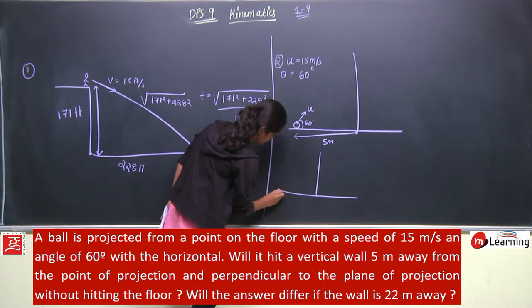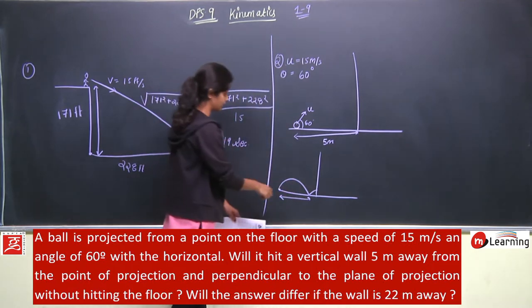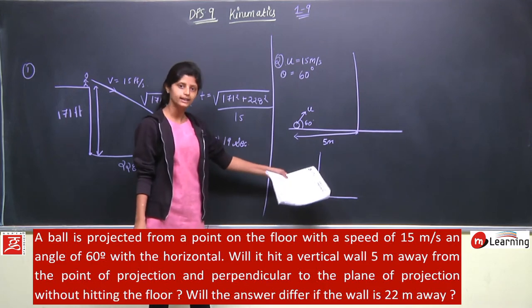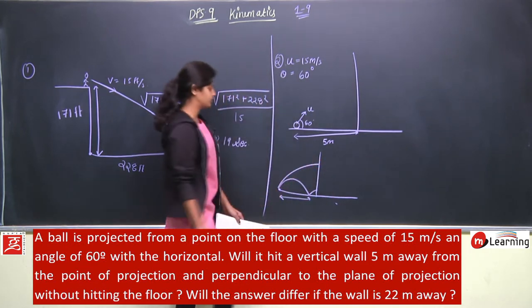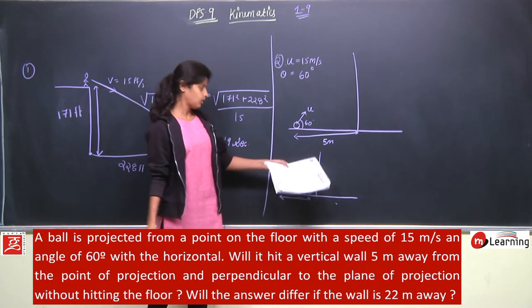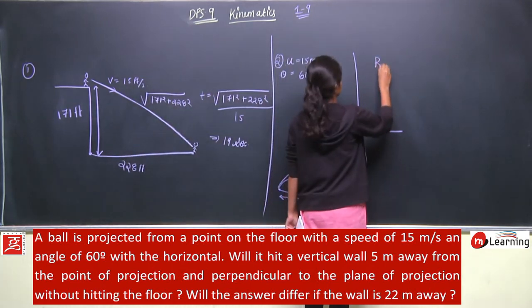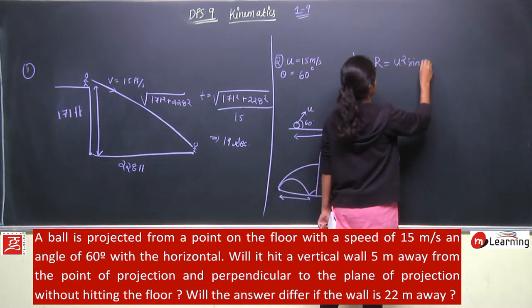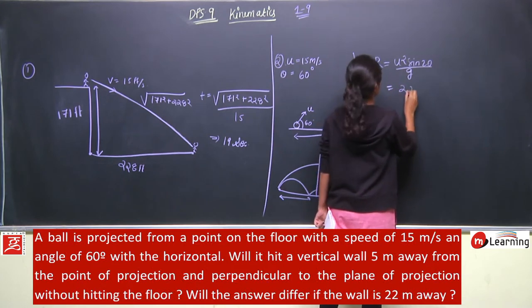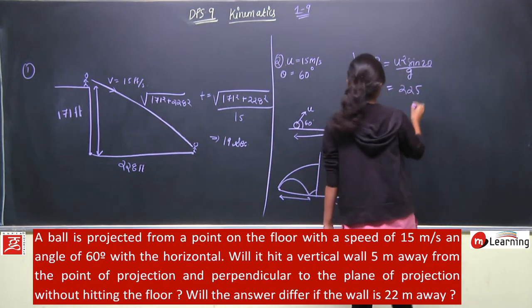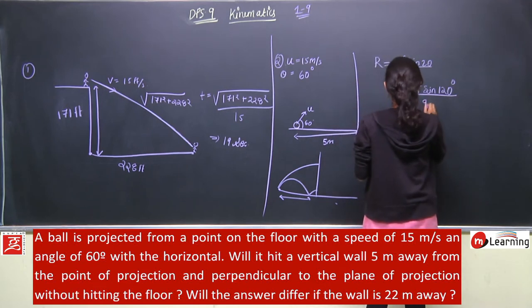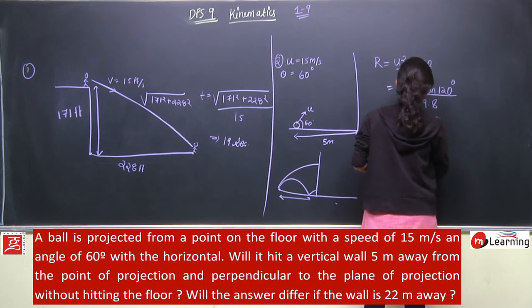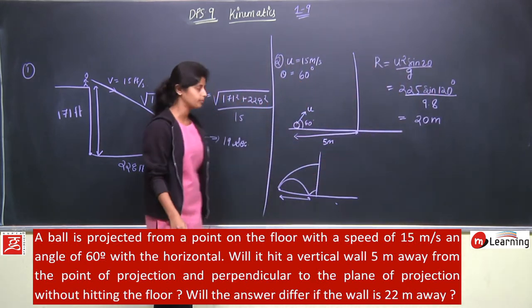If the trajectory is like this and the range is 5 meters from here, then this ball will directly hit. But if the range is 5 meters from here, then this trajectory will be this type and the ball will hit the wall. So we need to calculate range equals u square sin 2 theta by g. u is 225, sin 2 theta, sin 120 degree by g, 9.8. This comes out to be approximately 20 meter.